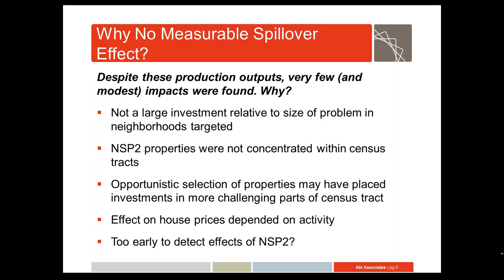The panelists are going to talk more about why they think that was the case. Despite the overall size of the grant program, it was dwarfed by the problems of the target neighborhoods, particularly for neighborhoods that had been declining for decades. Despite the intention of the program to concentrate resources, there was little evidence that grantees were able to do that. On average, only seven properties received investments in each tract, and they were often scattered across the tract rather than concentrating in a particular part of it.